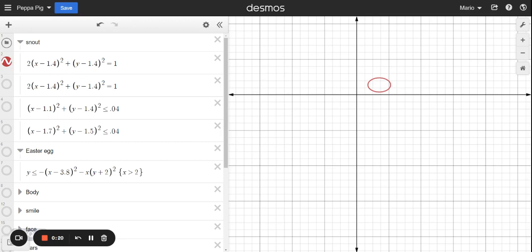I created an ellipse here where I have the equation created by this ellipse. Then I added a second line to make it a little more solid, like a double line. And then here I created this snout, and that is the snout.